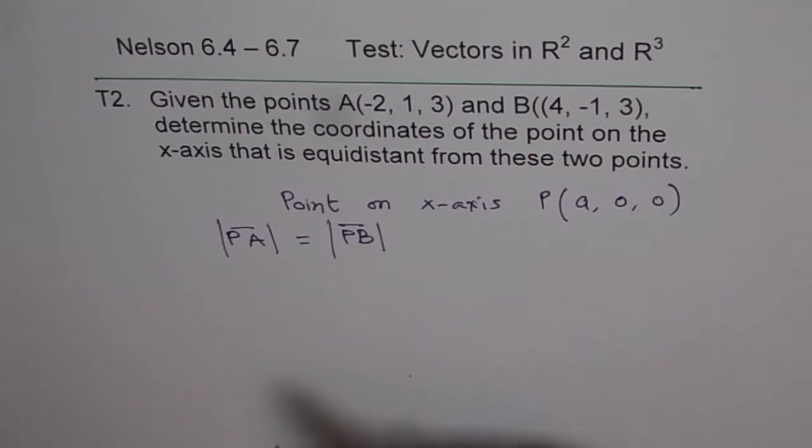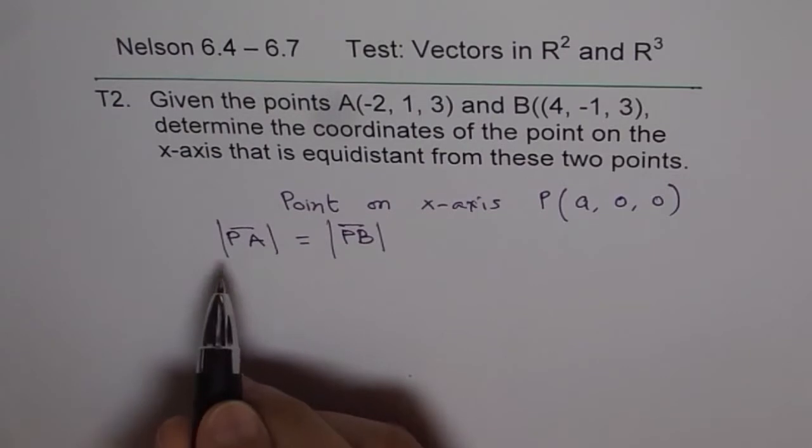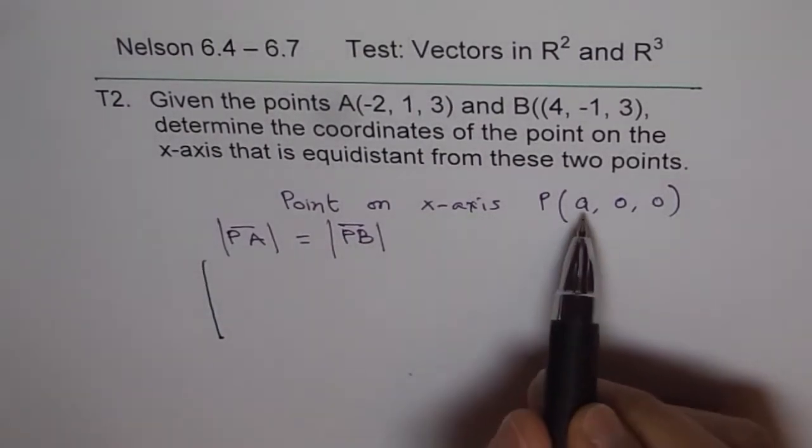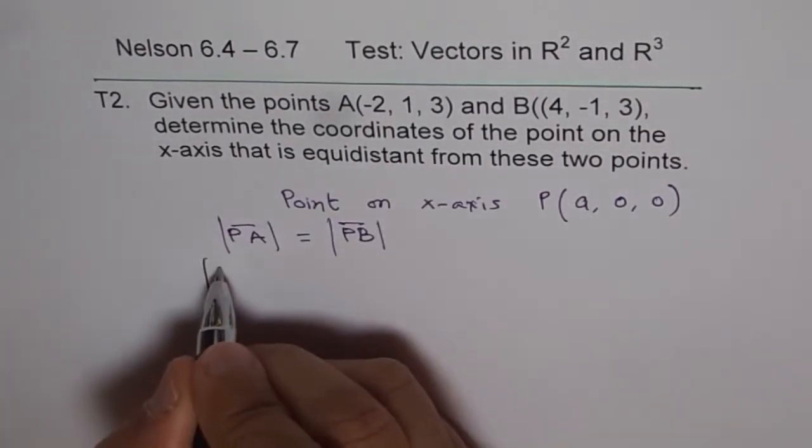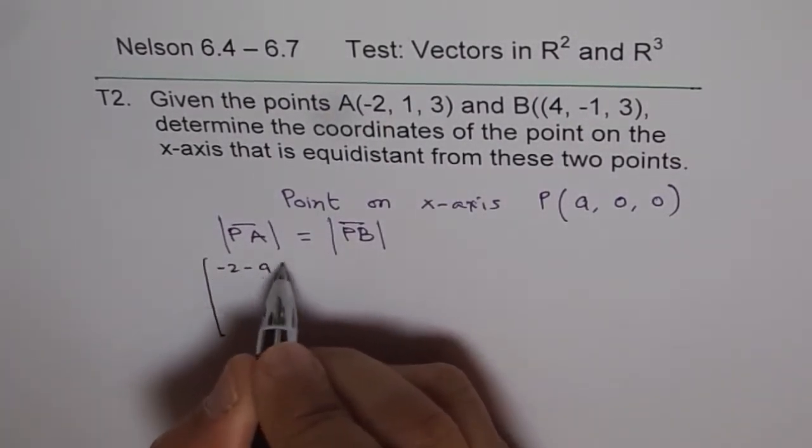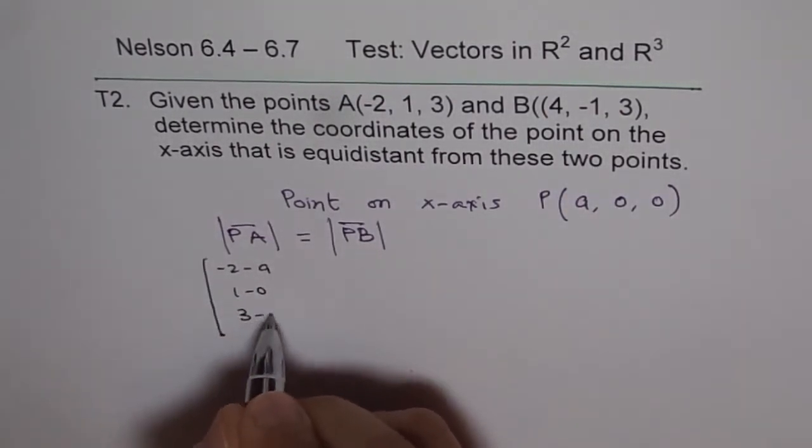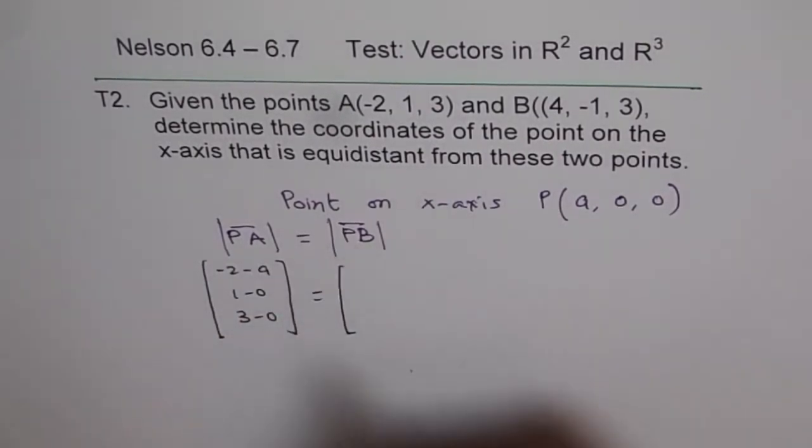And using column matrix helps you to do this question, right? For example, P to A, we could write like this. So from P to A, that means A minus these values, so we have minus 2 minus A, and 1 minus 0, 3 minus 0. So that is P to A should be equal to P to B.